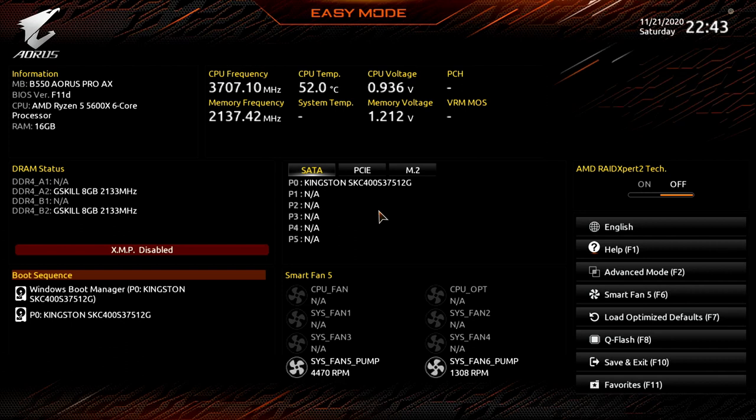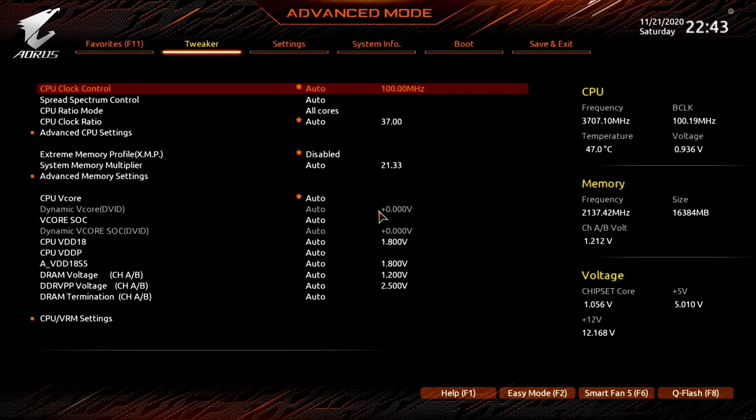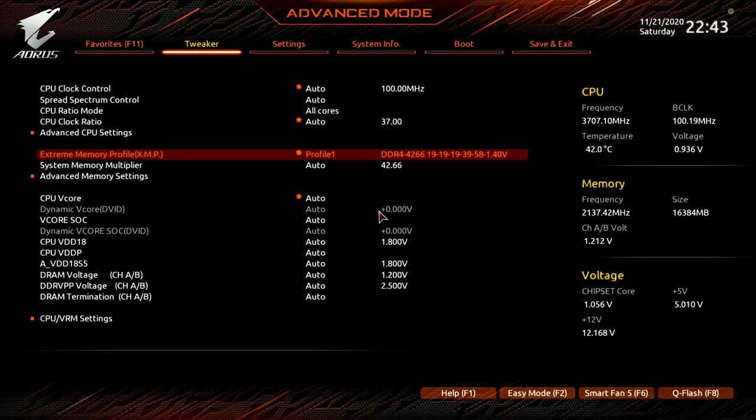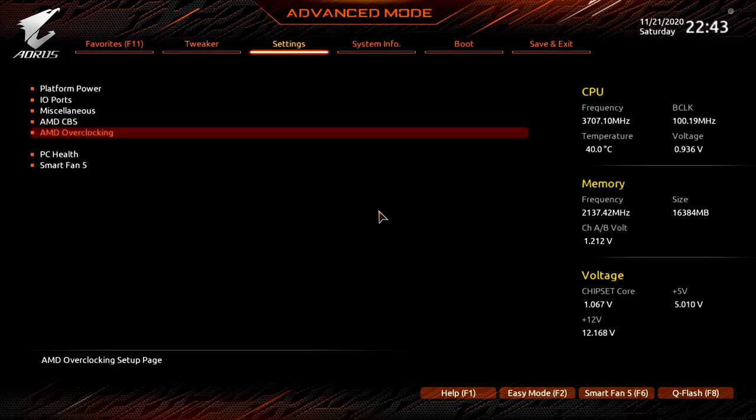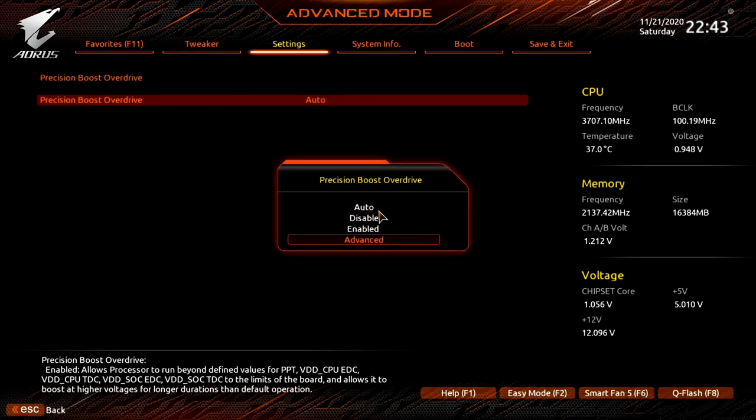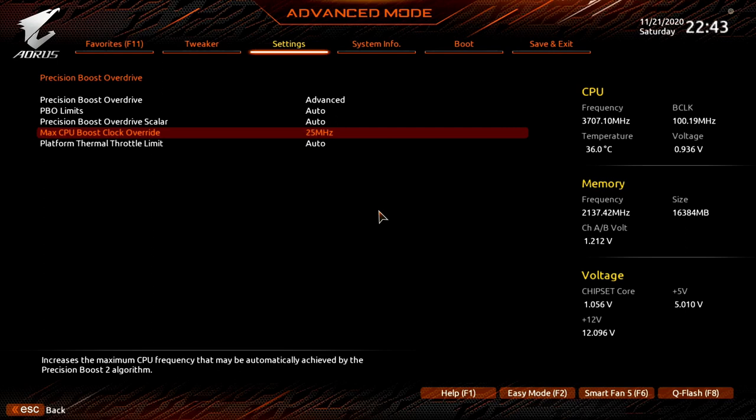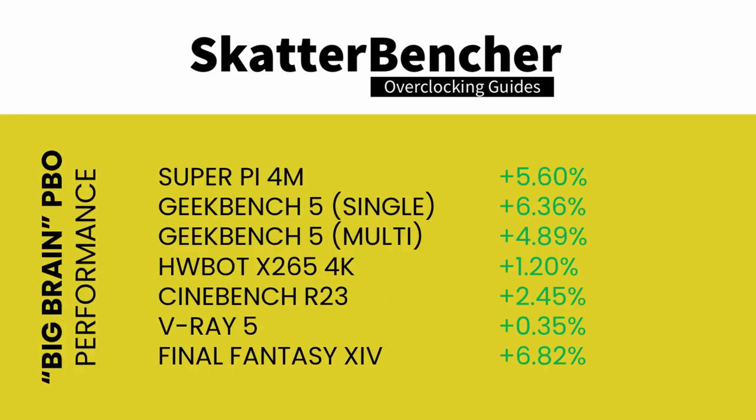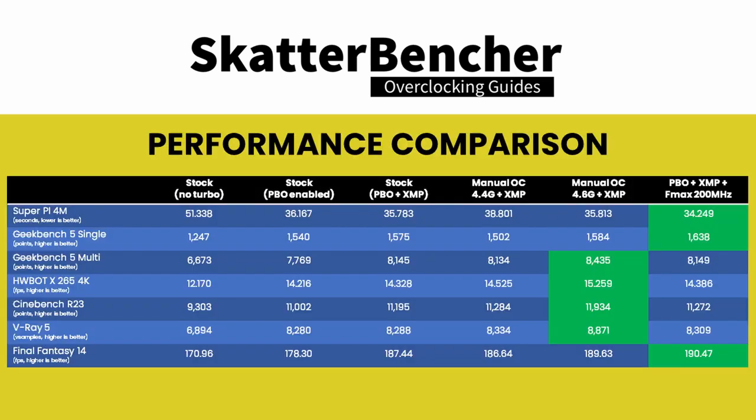Upon entering the BIOS, change to the advanced mode view. Set extreme memory profile to profile 1. Then navigate to the Settings menu. Enter the AMD Overclocking submenu. Press Accept. Enter the Precision Boost Overdrive submenu. Change the Precision Boost Overdrive option to Advanced. Then change the Max CPU Boost Clock Override to 200 MHz. Then save and exit the BIOS. We reran the benchmarks and checked the performance increase compared to default operation. By simply lifting the ceiling of the Fmax and using top-notch cooling, we're able to increase the performance of light workloads by quite a bit.